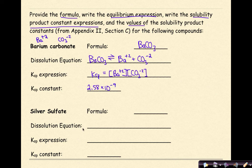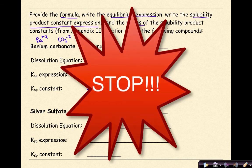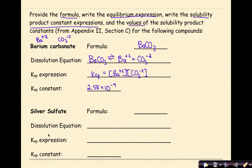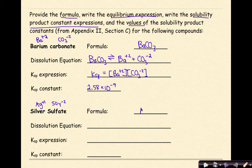Now stop, fill out the information for silver sulfate, and then check your work. Welcome back. The most common ion for silver is Ag⁺¹, and sulfate is SO4²⁻, so the formula for silver sulfate is Ag2SO4.